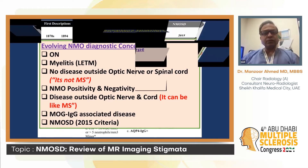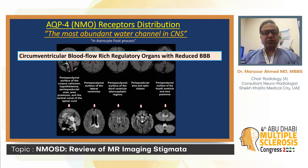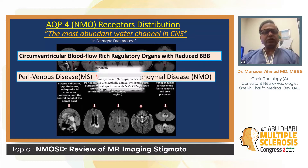Let's go back to the basics: aquaporin-4 receptor distribution. This is interesting and important for a radiologist because it reflects the MRI pattern of disease. It is the most abundant water channel in the CNS, found in the astrocytic foot process. It is in autoventricular blood flow-rich regulatory organs with reduced blood-brain barrier. It would not be wrong to say that MS is a perivenous disease, versus NMO-related demyelinating disease as peri-ependymal, as we will observe in their distribution pattern on MRI.